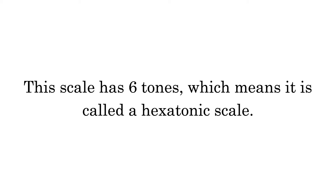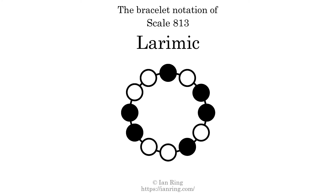This scale has six tones, which means it is called a hexatonic scale. This is a bracelet notation diagram of scale 813. The shaded circles represent tones that appear in the scale, and they are read clockwise, starting at the top.